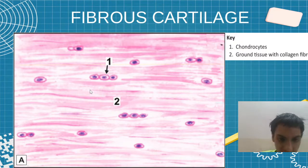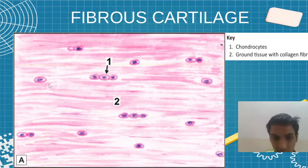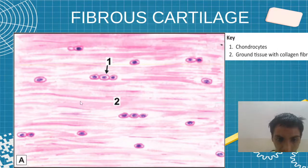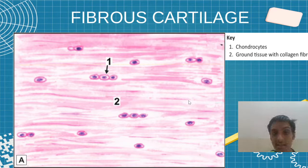Coming to fibrous cartilage, here we have the ground tissue with collagen fibers. That is the important feature - the ground tissue with collagen fibers defines fibrous cartilage.